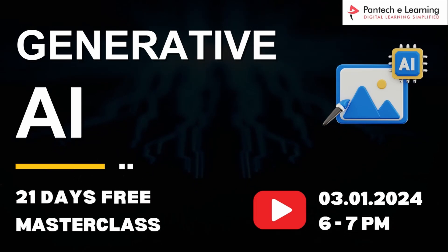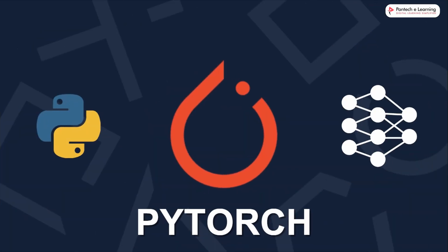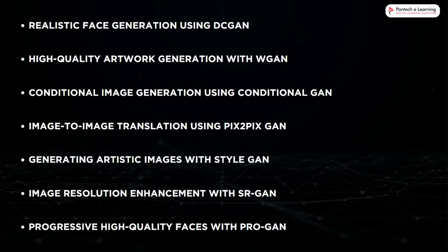In this Masterclass, we will be discussing the basics of Deep Learning with Python frameworks like PyTorch, Computer Vision, and learning how to build GANs and create projects including Realistic Face Generation, High Quality Artwork Generation, Conditional Image Generation, Image-to-Image Translation, Generating Artistic Images, Image Resolution Enhancement, Progressive High Quality Faces — all with different types of GANs.